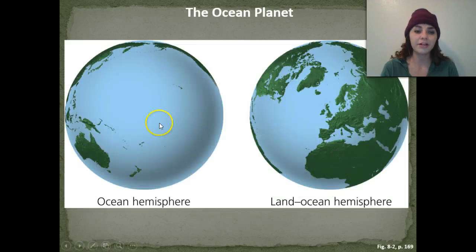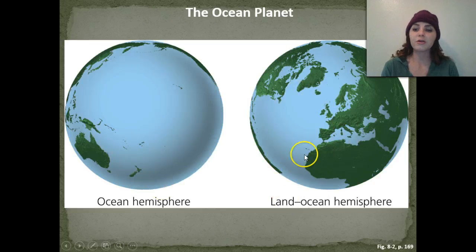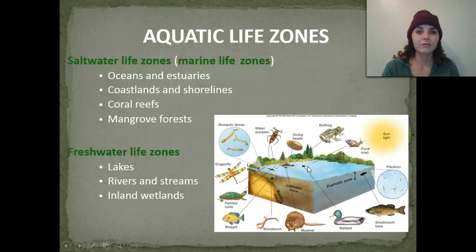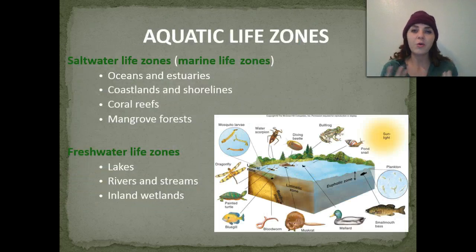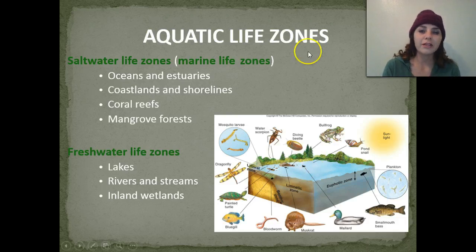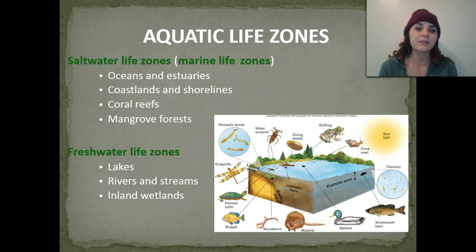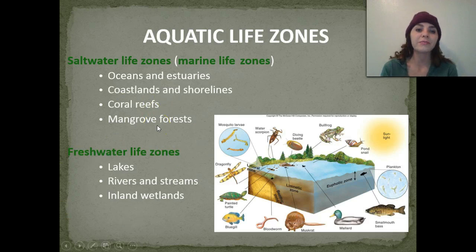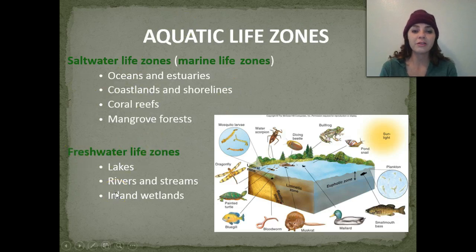This is the ocean planet right here — this would be pretty much the ocean hemisphere, and this is going to be our ocean-land hemisphere. We have different life zones that occur in aquatic areas. Salt water life zones include oceans and estuaries, coastlands and shorelines, coral reefs — which have the highest biodiversity in the ocean — as well as mangrove forests. Fresh water life zones include lakes, rivers and streams, as well as inland wetlands.